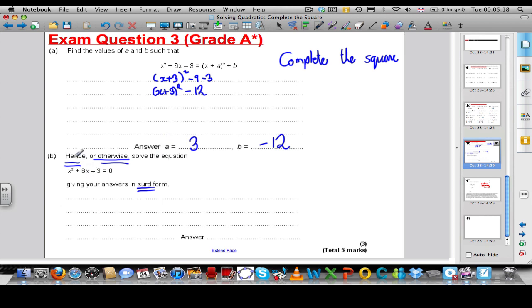Now, hence means using above. What have we done above that could help us? Well, if we're solving x² + 6x - 3 = 0, and we've just shown that x² + 6x - 3 is equal to this in the completed square form. Instead of solving x² + 6x - 3 = 0, I could solve the completed square version, i.e. (x + 3)² - 12 = 0.